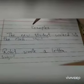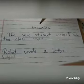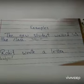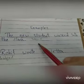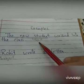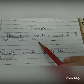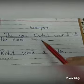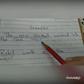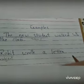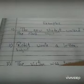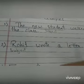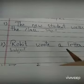Let us understand the definition of subject and predicate with the help of a few examples. The first one: 'The new student walked into the class.' If I ask you — what are we talking about in this sentence, or about whom are we talking? You will get the answer: the new student. That means this is our subject.